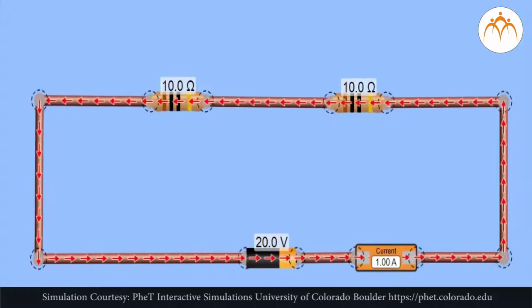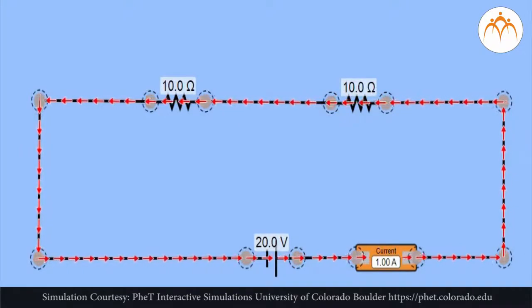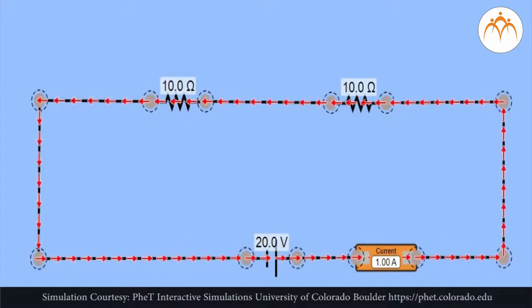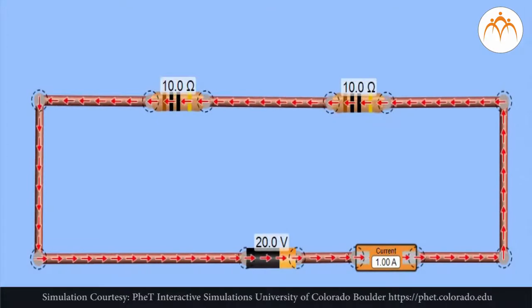Charges flow together through the external circuit at a rate that is the same everywhere. The current is not greater at one location than another. The actual amount of current varies inversely with the amount of overall resistance.